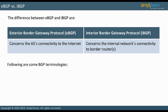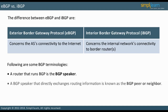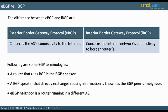Let us look at some BGP terminologies. A BGP speaker is a router that runs BGP. A BGP peer, or neighbor, is a BGP speaker that directly exchanges routing information. It is configured with the neighbor command. Neighbors cannot be automatically discovered as in EIGRP or OSPF. An eBGP neighbor is a router running in a different AS. These neighbors are usually directly connected. BGP is the standard routing protocol used by Internet service providers.